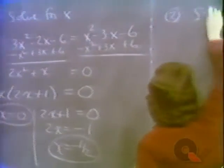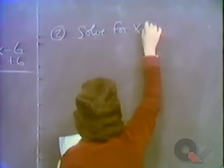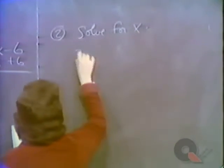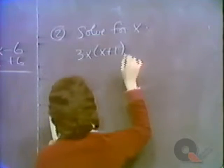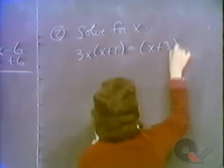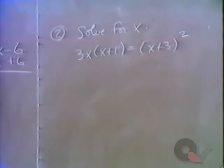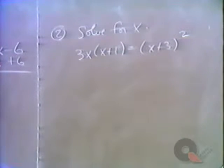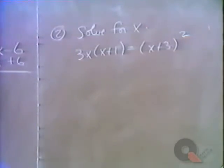In our next example, once again solve for x: 3x times the quantity x plus 1 equals the quantity x plus 3 squared. First we're going to perform the indicated multiplications, simplify, get everything on one side equal to zero, and then solve that quadratic equation.